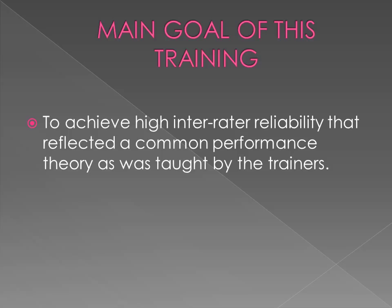The main goal of this training is to achieve high inter-rater reliability that reflected a common performance theory, as taught by the trainers. Every study provided training on four main dimensions: motivating employees, developing employees, establishing and maintaining rapport, and resolving conflicts. The resolving conflict dimension items were usually used as a distractor or were not addressed during the performance evaluation. True scores were usually determined using experts who had intensive training in the relevant performance theory.